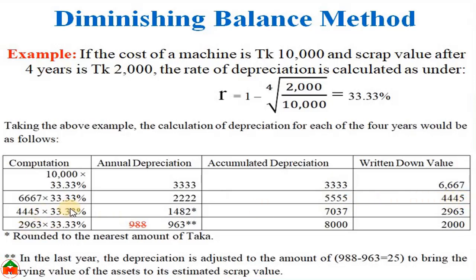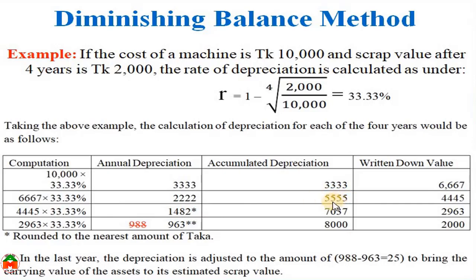In the third year, the rate is applied on the written down value of 4,445. After applying the rate of 33.33 percent, the annual depreciation for year three is 1,482. Adding this to the previous accumulated depreciation of 5,555 gives accumulated depreciation of 7,037. Deducting this from the cost price gives a written down value of 2,963.